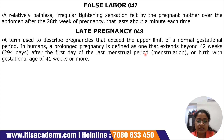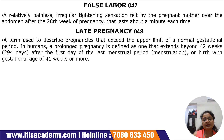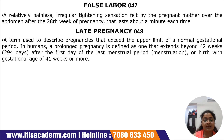Late pregnancy, subcode O48, is a term used to describe pregnancies that exceed the upper limit of a normal gestational period. In humans, a prolonged pregnancy is defined as one extending beyond 42 weeks after the first day of the last menstrual period, or a birth with a menstrual age of 41 weeks or more. Normally delivery occurs around 38 to 39 weeks; if it stretches to 41 weeks or beyond, that is considered late pregnancy.